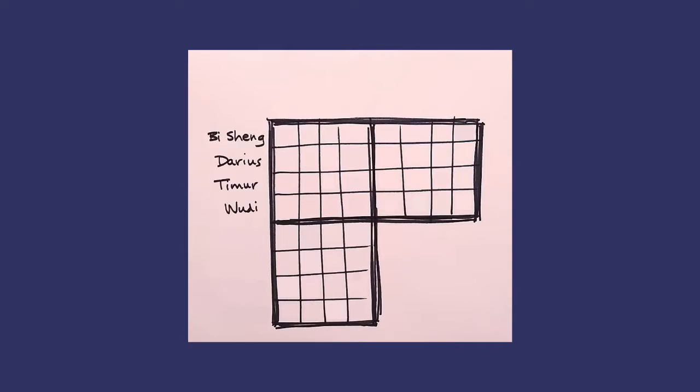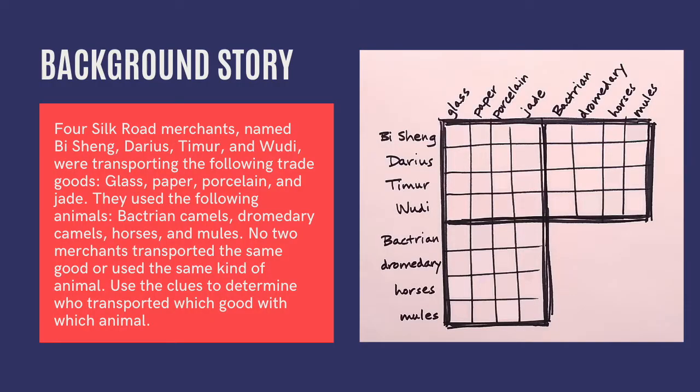This puzzle is about four merchants who are named after some historical figures associated with the Silk Road. They're transporting four different kinds of trade goods, and they're working with four different kinds of pack animals. This information belongs in a background story, and this is a good time to write that.